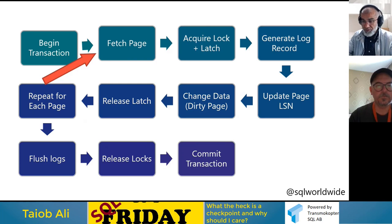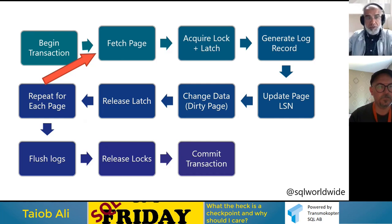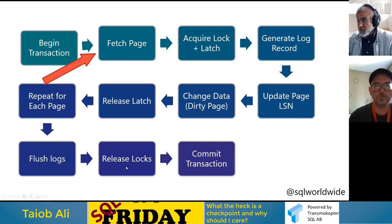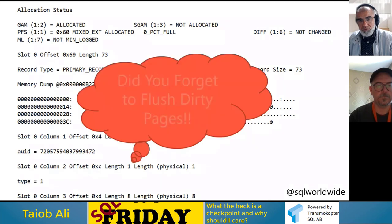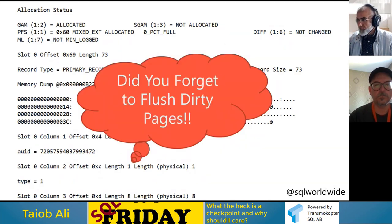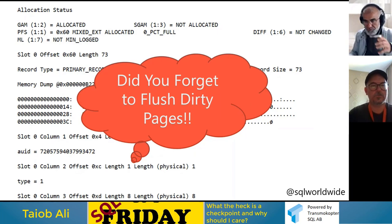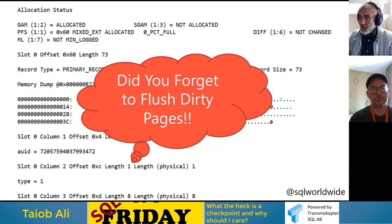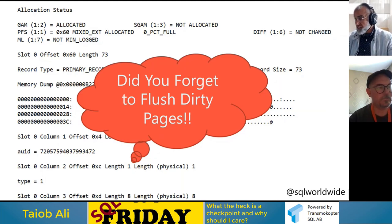Once all updates are done, SQL Server flushes the log records to disk, releases the lock, and tells the caller that the transaction is committed. You might wonder: didn't we forget to write the data pages to disk? No — that's what the term write-ahead logging means. The log is already hardened, so if there's a crash or power loss, SQL Server goes to the log from the last checkpoint and redoes the updates.